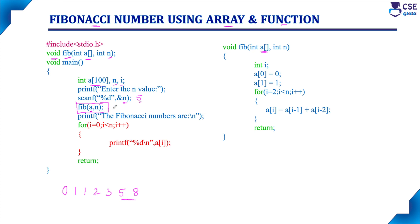When the function is called, control is immediately transferred to the user-defined function. In a function call, it is enough to specify the array name — no need to specify the size, and even an empty square bracket is not required. But in the function declaration and the function header of the function definition, it is required to specify the array with an empty square bracket, though specifying the actual size is not necessary.